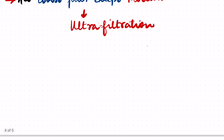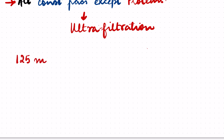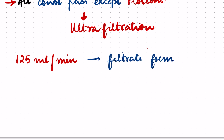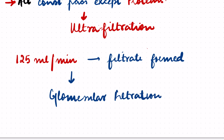The amount of blood that is filtered is 1100 to 1200 ml per minute, but the amount of filtrate that is formed per minute is 125 ml. This is the GFR — that is, glomerular filtration rate. If they ask you what is the GFR in a normal individual, you will say 120 to 125 ml per minute.